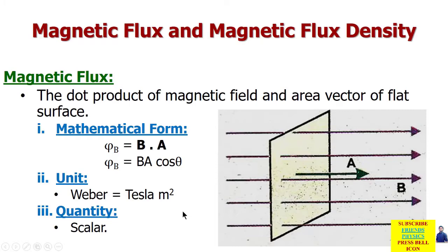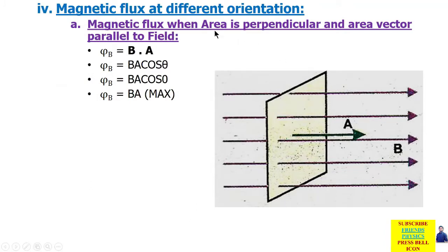अब हम different conditions पर चलते हैं कि magnetic flux कब maximum, minimum, और within value exist कर सकता है। जब area, magnetic field के perpendicular हो और area vector, field के parallel हो — यह जो yellow shape बनी हुई है वो area है — तो area vector और B चूँकि parallel हैं, equation होगी: φ = BA cosθ, θ = 0°, cos0° = 1, तो φ = BA. यह maximum flux होगा। जब area perpendicular हो और area vector parallel हो तो flux maximum होगा।